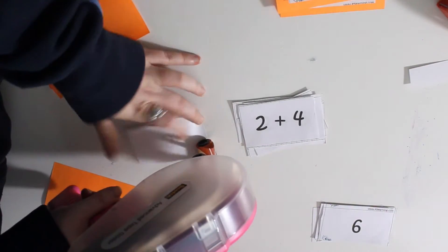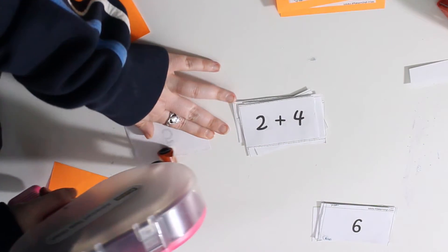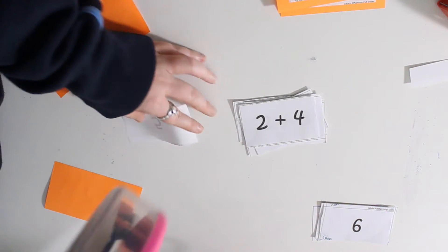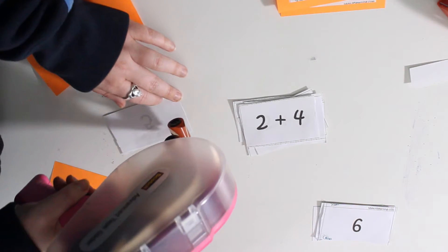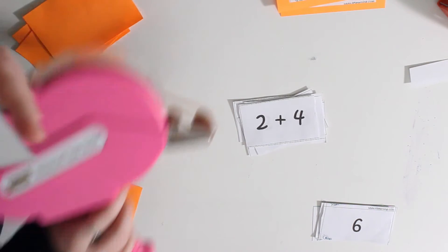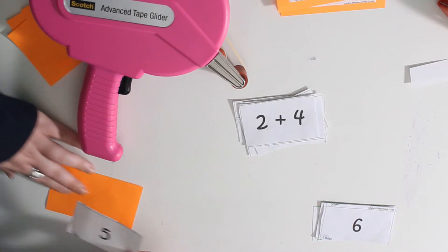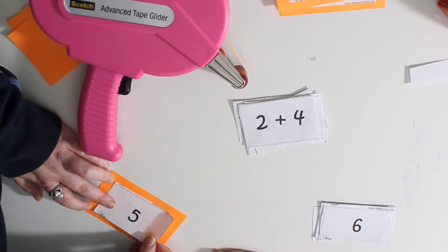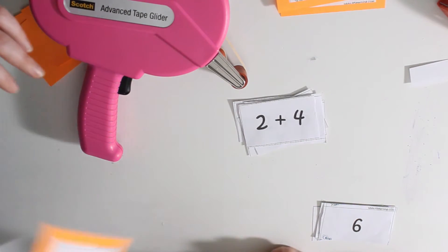If two plus three is five, then three plus two is? If I have two things and I add three more, I have five. If I have three things and I add two more, how many do I have? Five! Five! That's right!